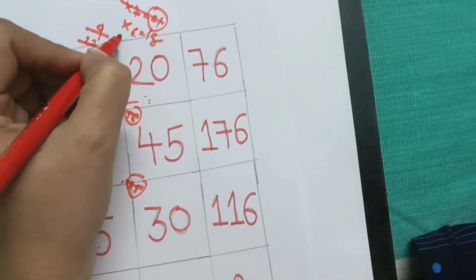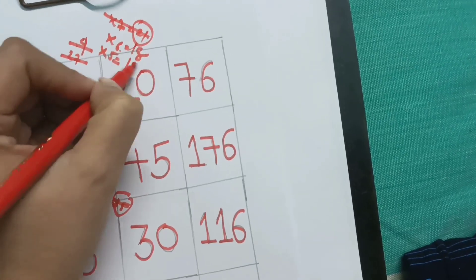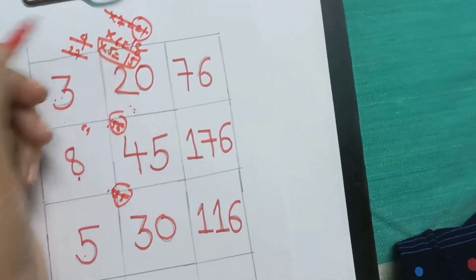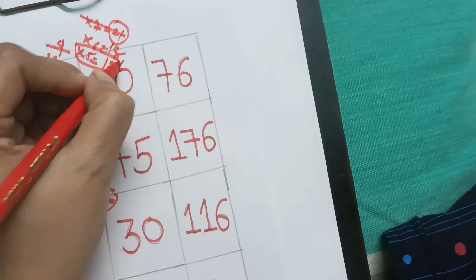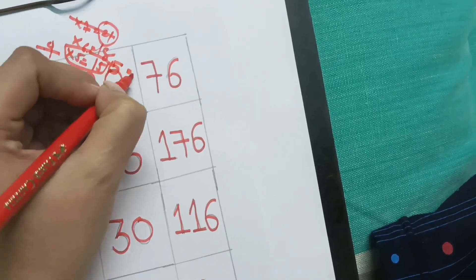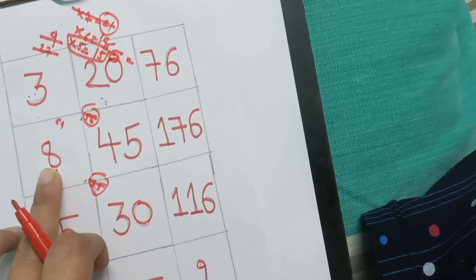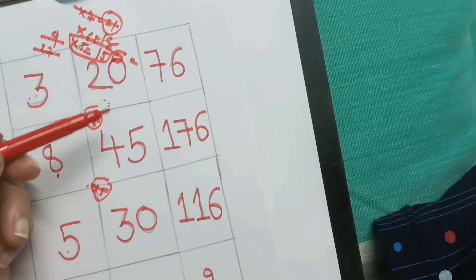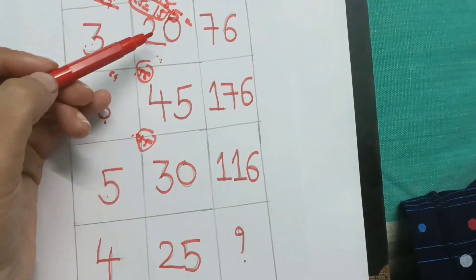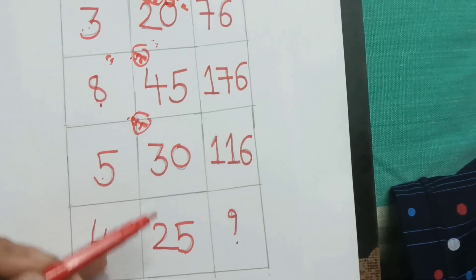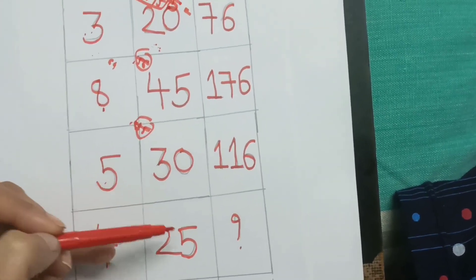Now let's try 5. Three fives are 15, and when we add 5 we get 20: 15 plus 5 equals 20. Looking at the numbers shown — 20, 45, 30, 25 — we can see that 5 is something that is being added or subtracted in these numbers.